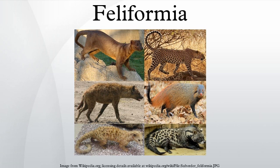Family Euploridae includes Fossa, Falanouc, Malagasy civet and Malagasy mongooses, all of which are restricted to the island of Madagascar. There are 8 species in the family though variations in form are significant. These differences initially led to the species in this family sharing common names with, and being placed in, different families of apparently more similar species on the mainland. However, phylogenetic analysis of DNA provides strong evidence that all Malagasy carnivorans evolved from a single common ancestor that was a herpestid. Recent phylogenetic analysis supports this view and places all of the Malagasy carnivorans in the family Euploridae.